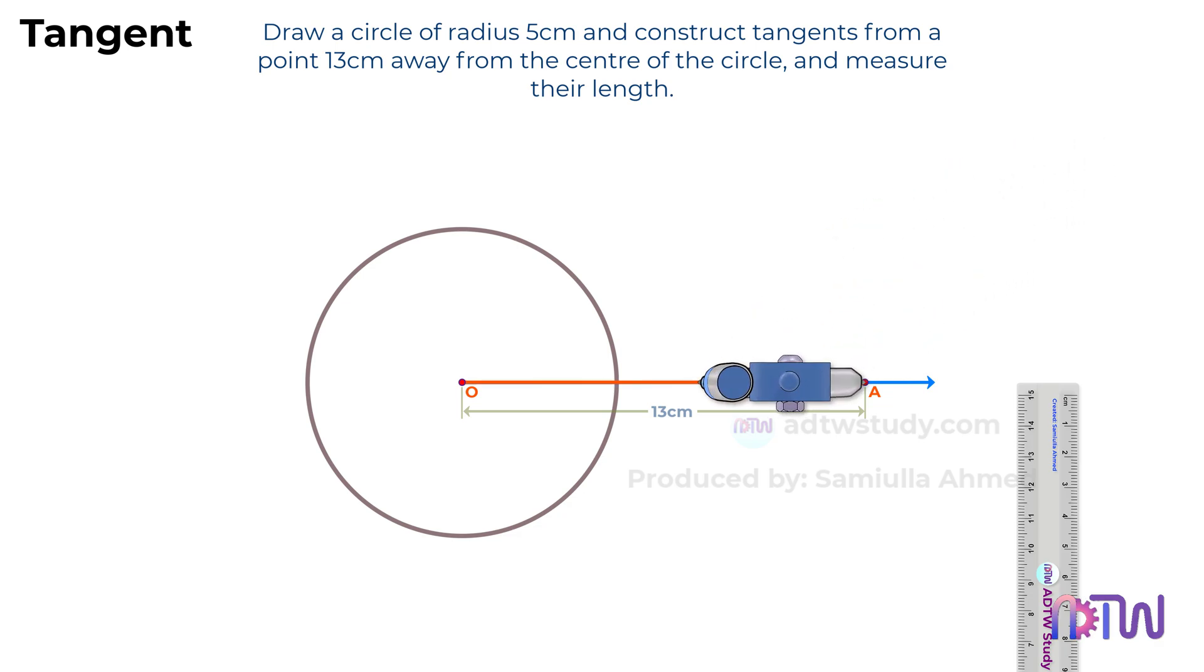To do so, take a compass and adjust it to a length more than half of this distance, then using these two points as the center, cut the arcs as shown.